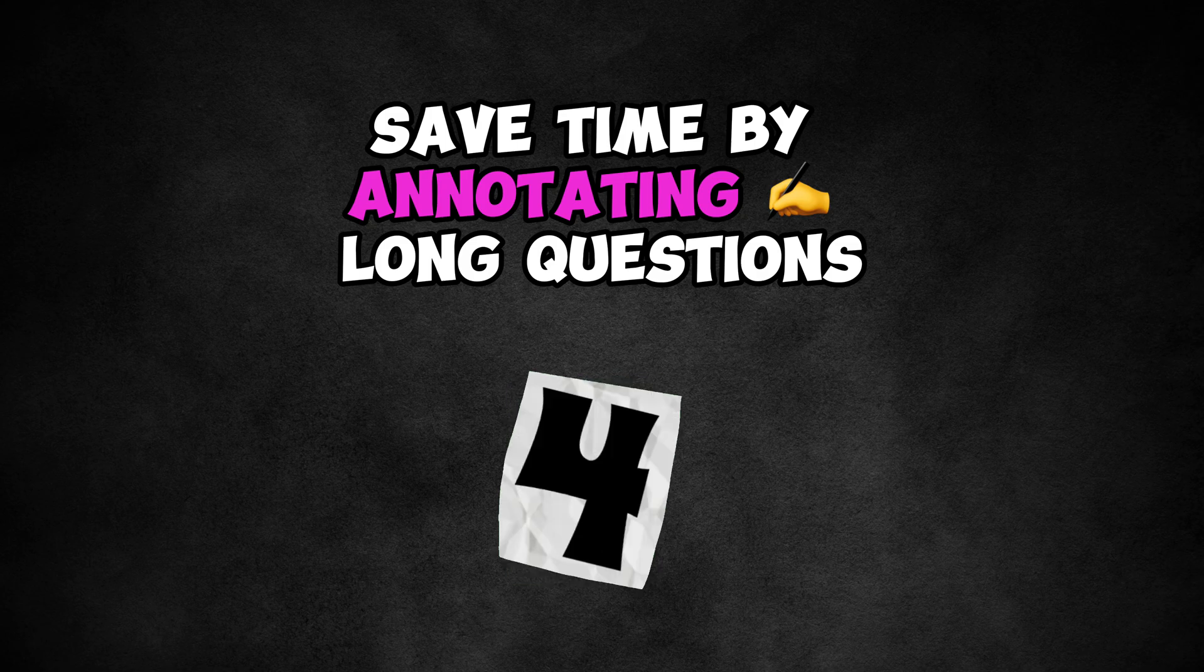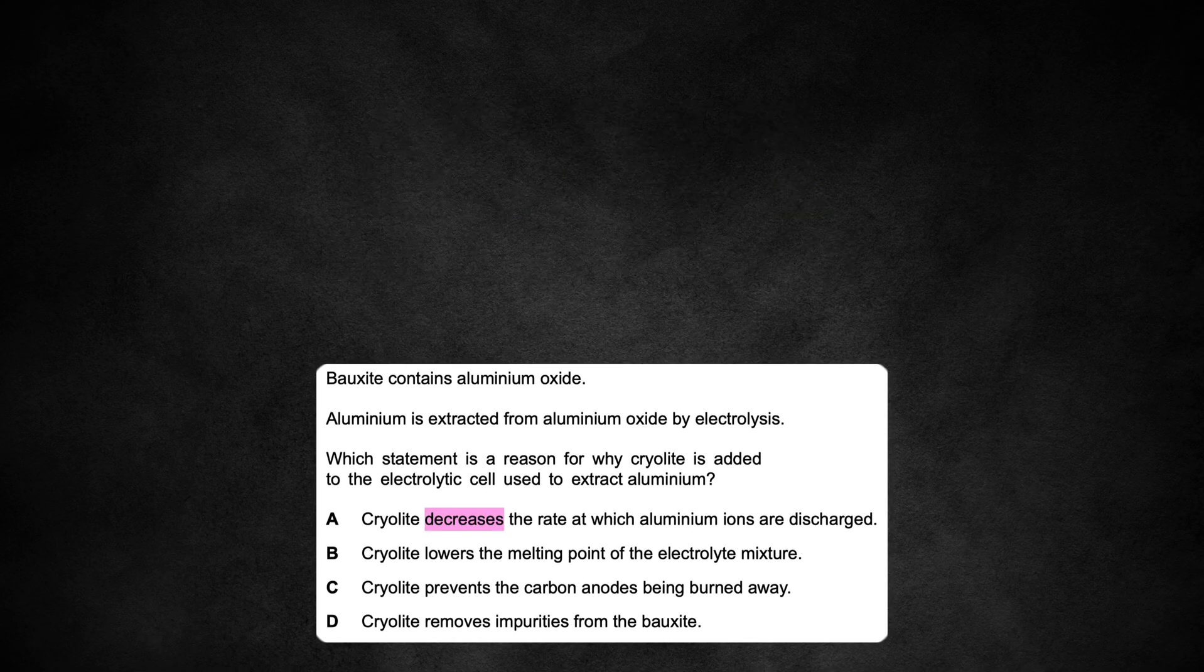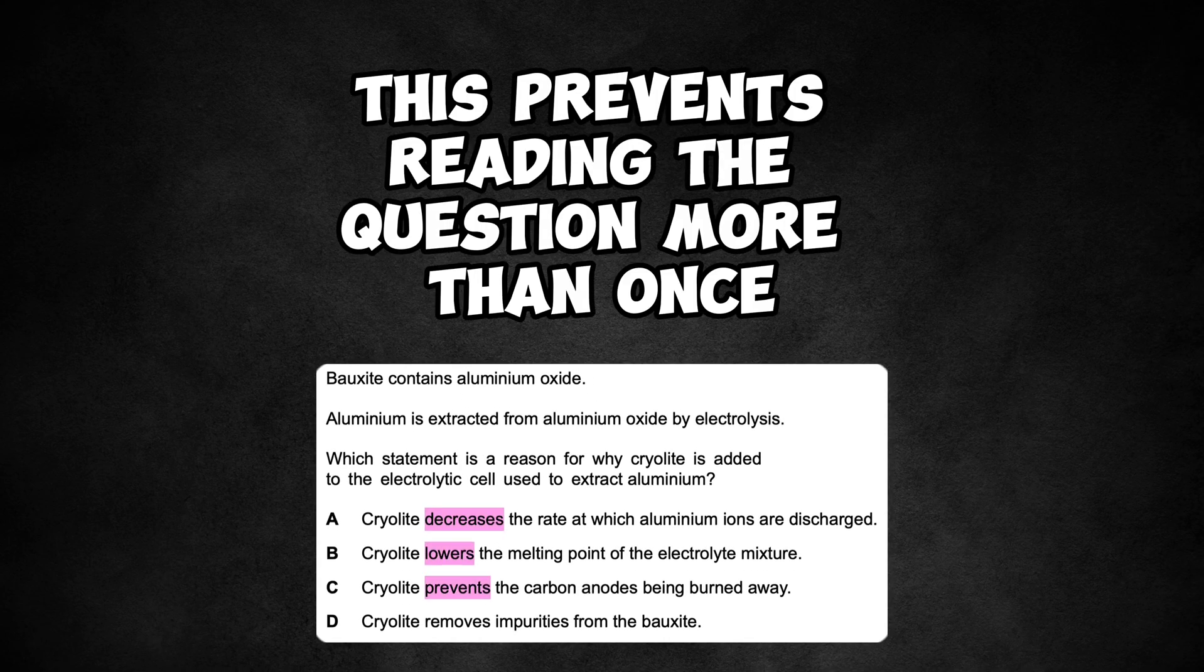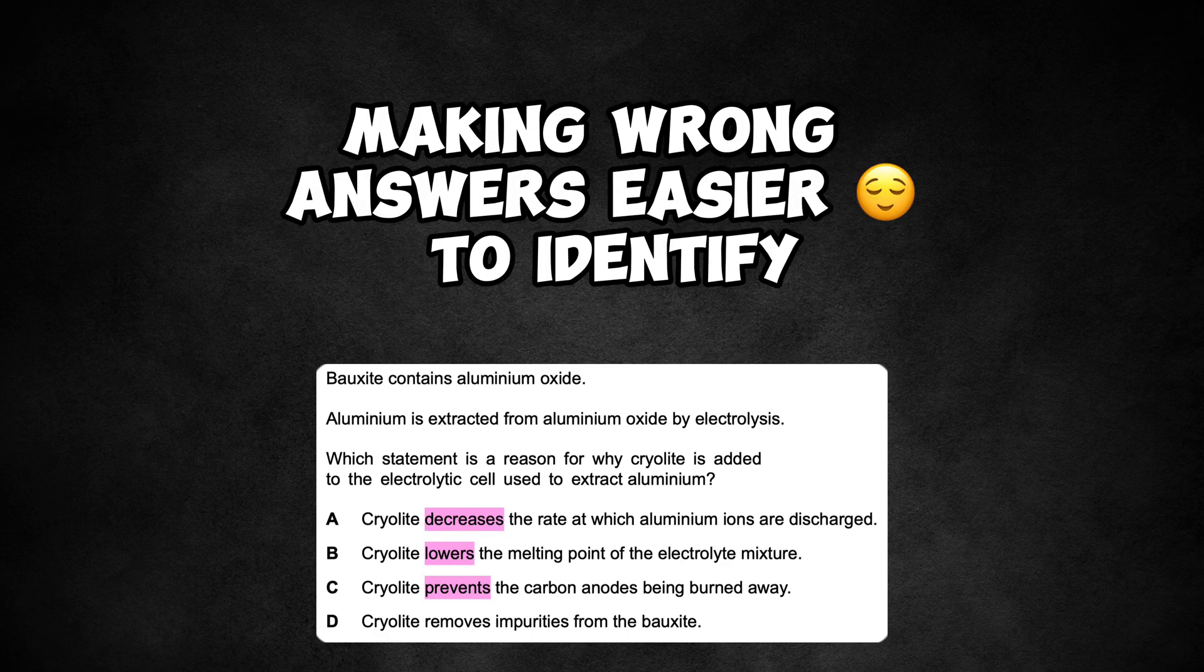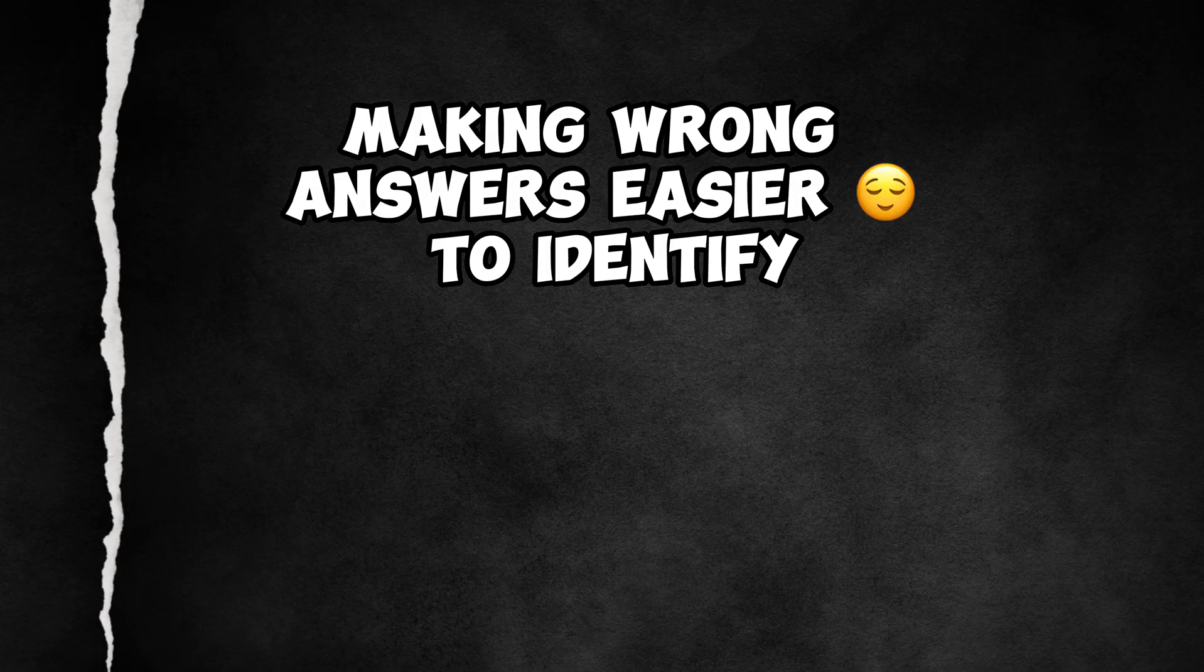Four, save time by annotating long questions. This prevents reading the question more than once and helps you spot common incorrect words among the options, making wrong answers easier to identify.